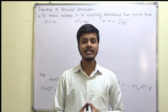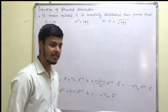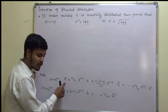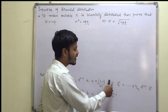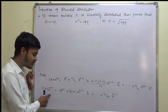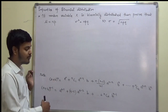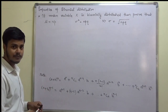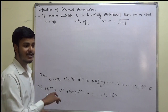So without much ado, let us begin. But before that, let me recall the binomial expansion that we have already seen, for the sake of simplicity. The binomial expansion of (a+b)^n is a^n + nC1·a^(n-1)·b + n(n-1)/2! · a^(n-2)·b² + ... + nCn·b^n. Likewise, you can have an expansion of (a+b)^(n-1) and we are going to make use of (a+b)^(n-1) as well as (a+b)^(n-2).